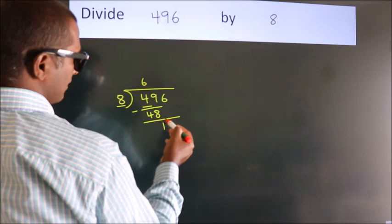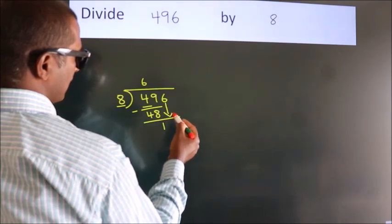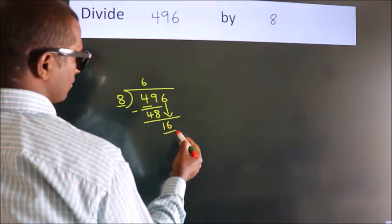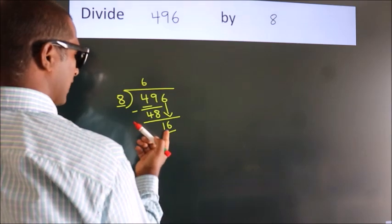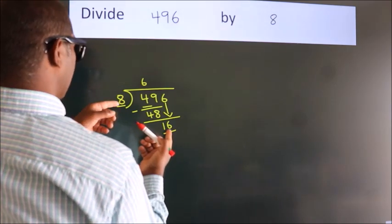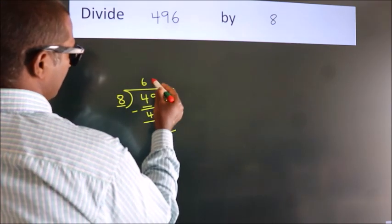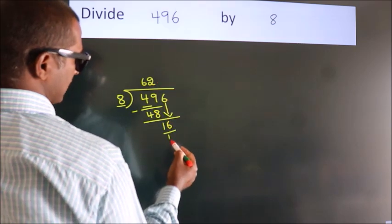After this, bring down the beside number. So 6 down, making 16. When do we get 16 in the 8 times table? 8×2=16.